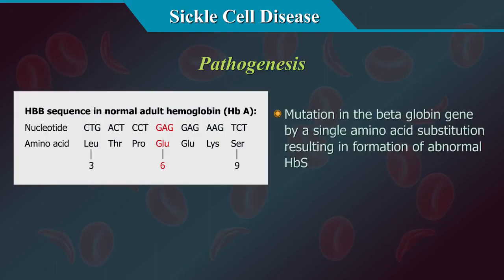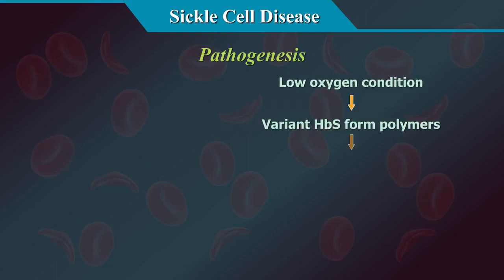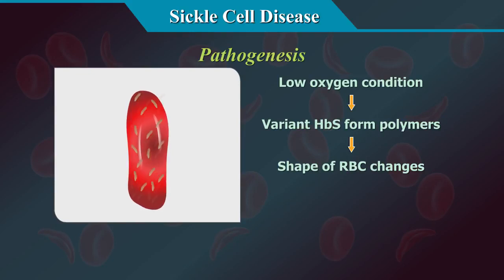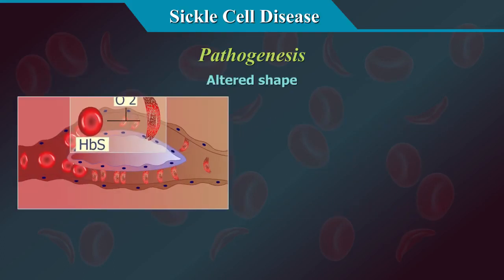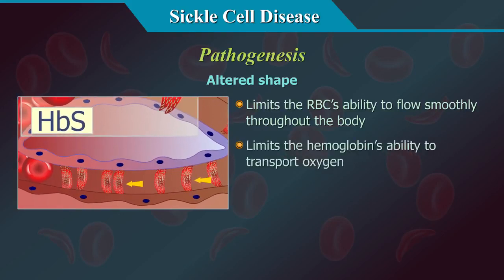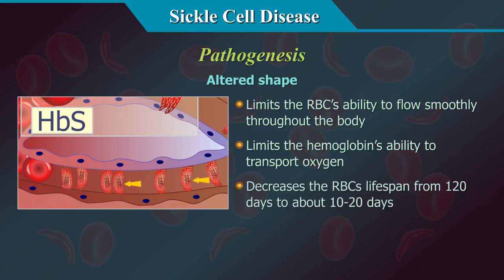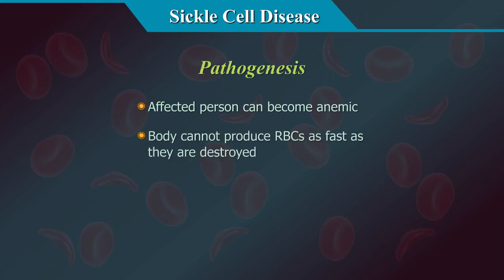Sickle cell anaemia is an inherited disorder arising from a mutation in the beta-globin gene by a single amino acid substitution, resulting in the formation of an abnormal HBS. In low oxygen conditions, this variant HBS forms polymers, changing the shape of the RBC from a round disc to a characteristic crescent or sickle shape. This altered shape limits the RBC's ability to flow smoothly, limits haemoglobin's ability to transport oxygen, and decreases the RBC's lifespan from 120 days to about 10 to 20 days. The affected person can become anaemic because the body cannot produce RBCs as fast as they are being destroyed.